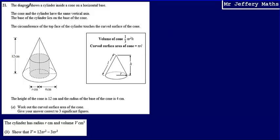This is question 21. Here we're told the diagram shows a cylinder inside a cone on a horizontal base. We're then told the cone and the cylinder have the same vertical axis. By vertical axis it just means that they have the same centre point, if you like, so that line is the same.